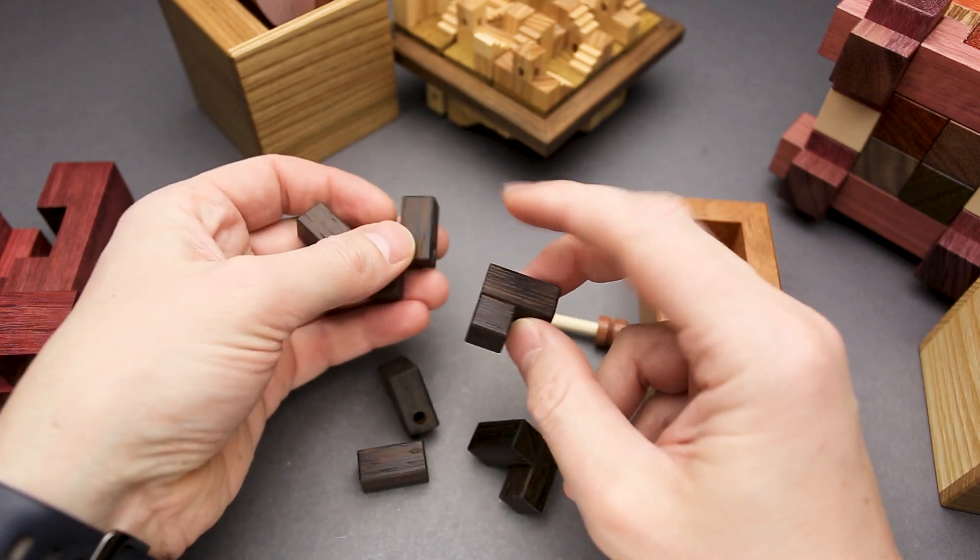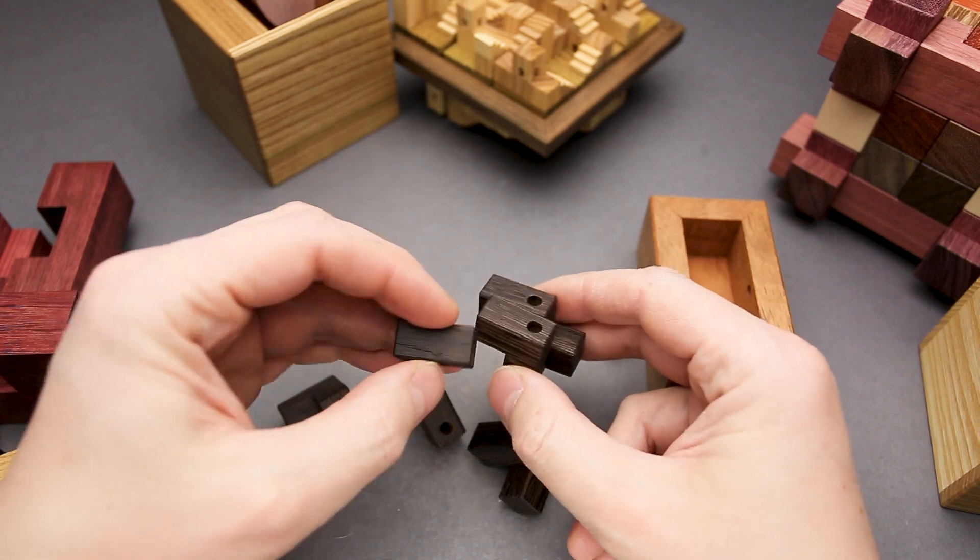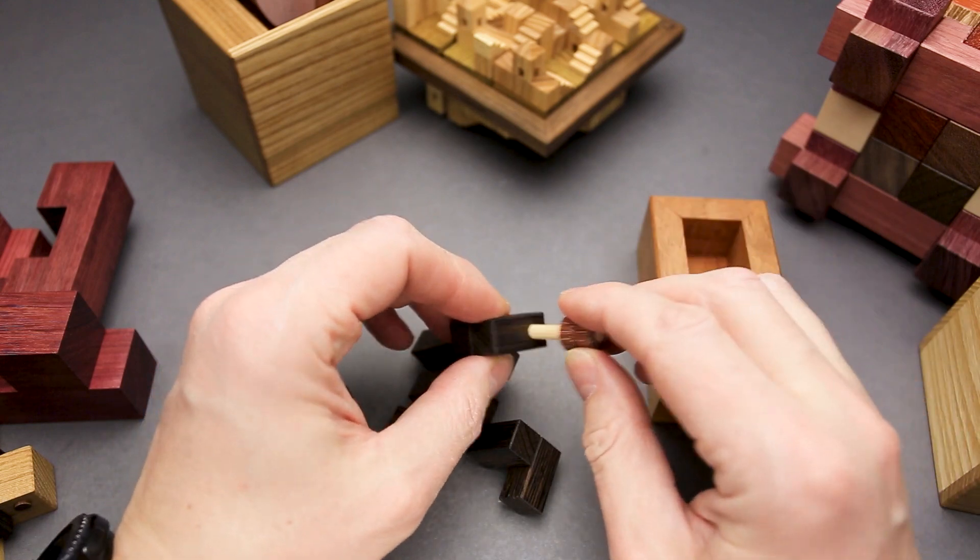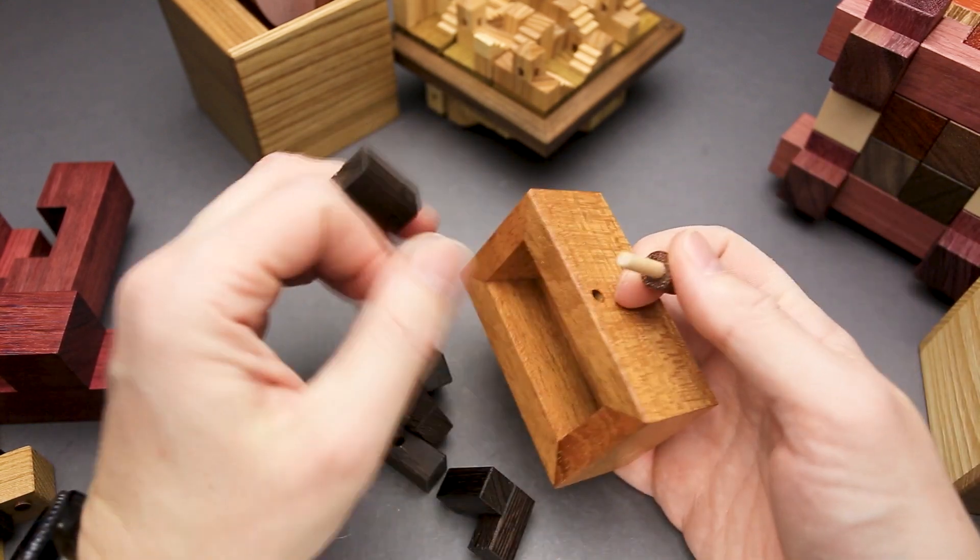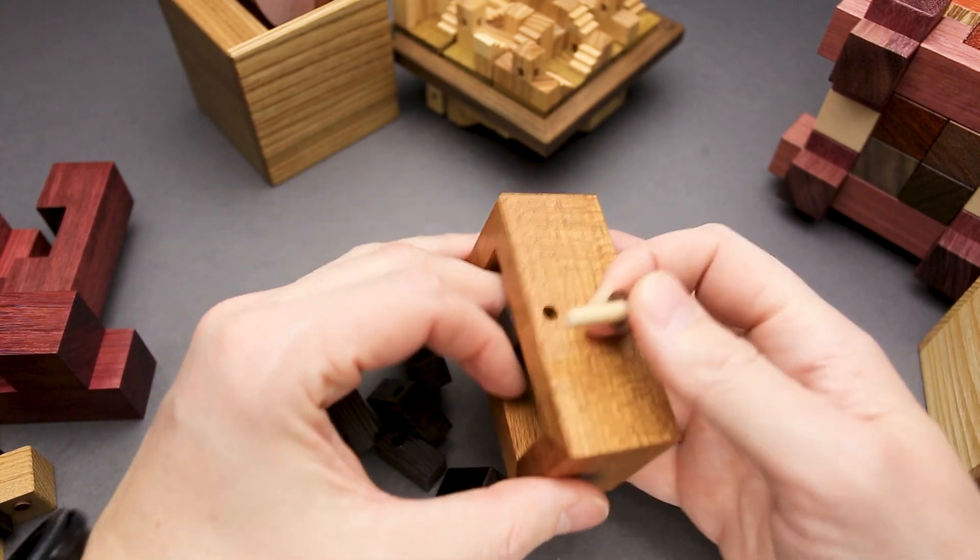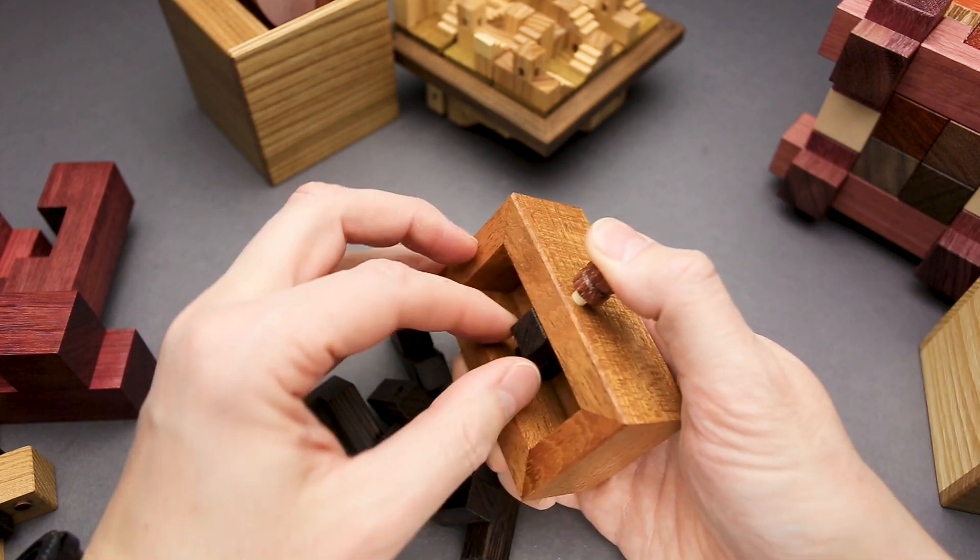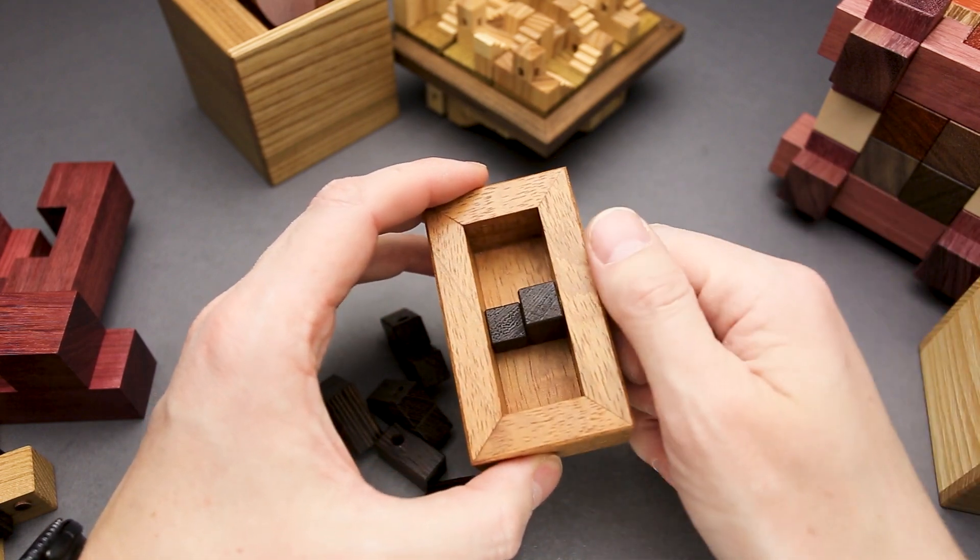If you noticed already, there are cutouts in four out of six parts, circle cutouts, and they're big enough to fit the pin. When you put the parts inside the frame, you have to put them in such a way that one of the pieces will be facing the cutout in the box, and then you will be able to put the pin through both cutouts and only then the puzzle will be solved.